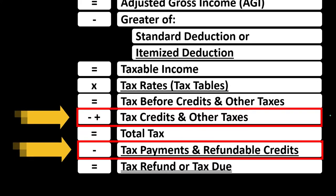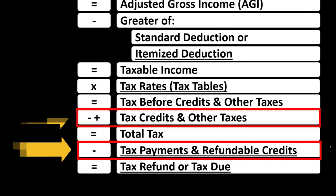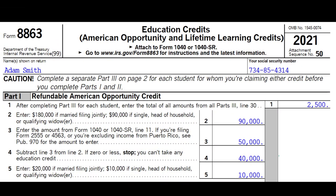We have two main categories of credits: non-refundable credits and refundable credits. Non-refundable credits do not typically take the tax liability below zero. Refundable credits may take it below zero, which would result in what looks like a refund — though at that point it's more like a benefit program.